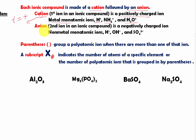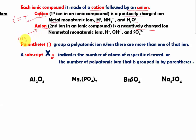Now we move on to anions, which is the second ion in an ionic compound. It is a negatively charged ion. If you don't remember, an anion is negative — look at the word 'anion.' The N right there represents 'negative.' That's how you know anion is negative.